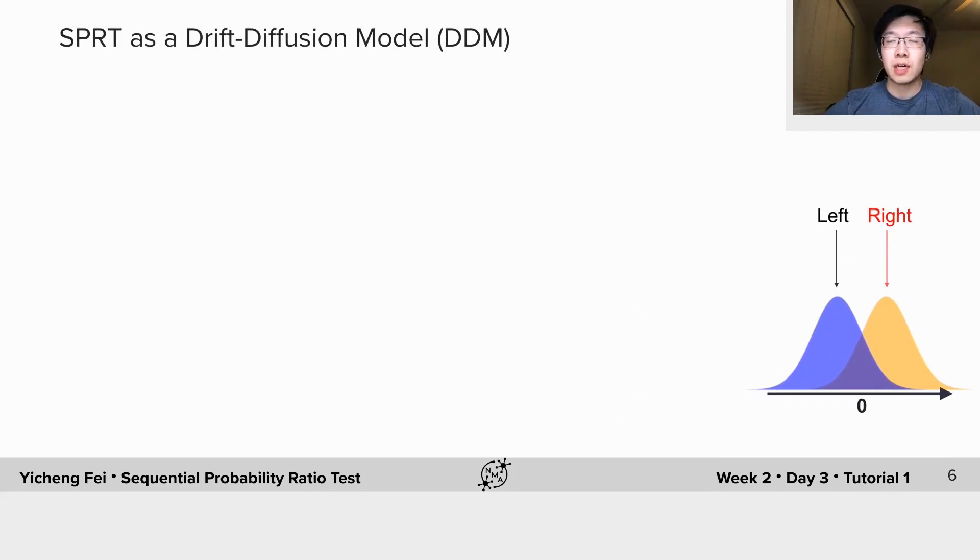Now, let's do some calculations in this special example to see what kind of process the accumulated evidence is undergoing. First, we assume p-left and p-right are both Gaussian distributions with different means and same variance. Without loss of generality, we let p-right to be the true data-generating distribution.